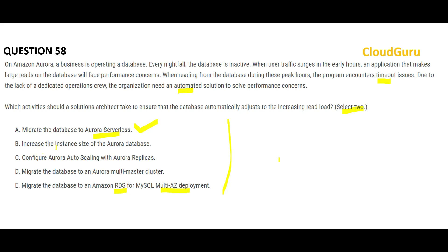Option B says we should increase the instance size of the Aurora database — that is not needed, as we saw that Aurora Serverless does that automatically. Option C looks correct because it creates Aurora Replicas. The use of replicas here is that they are read-only, so when we try to read from the database during peak hours, that traffic will be sent to your replicas. So this looks correct.